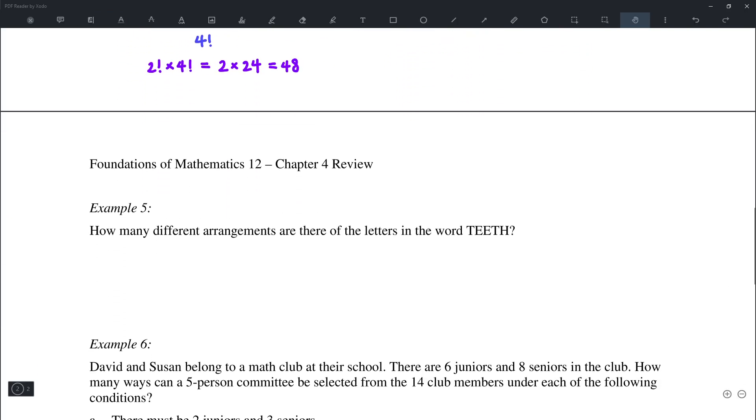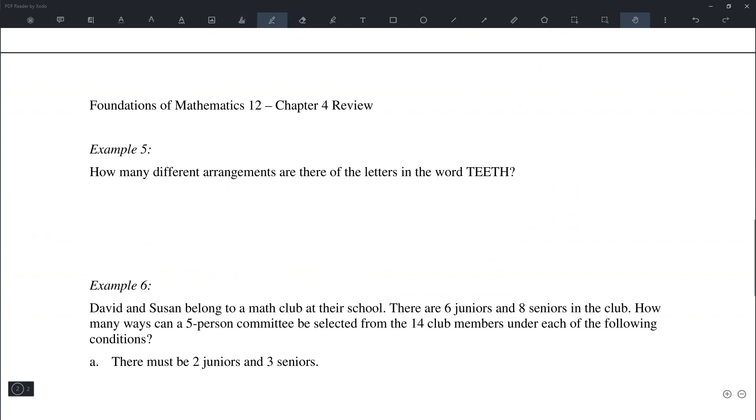Example number 5. So here we are looking for the total number of arrangements for the letters in the word TEETH. So we know there are five letters, and there are two E's and two T's. So now we can simplify. We know that 5! = 120. 2! is simply 2. So we have 2 times 2 in the denominator. So this is going to be 120 divided by 4, which means there are 30 arrangements of the letters.